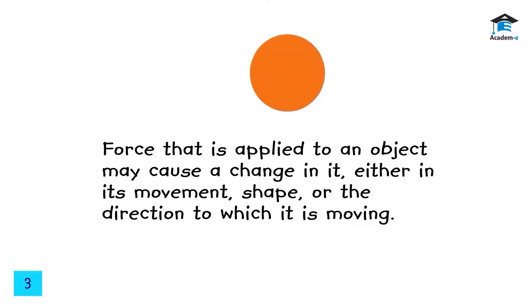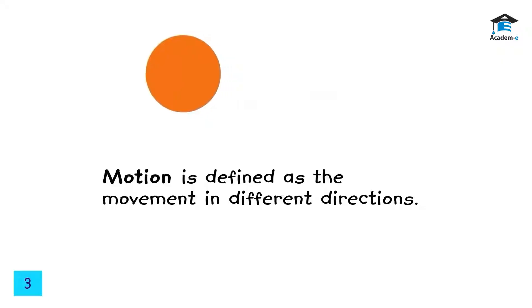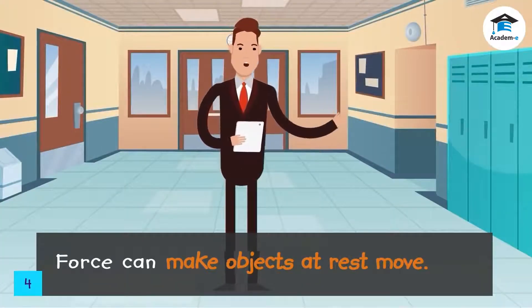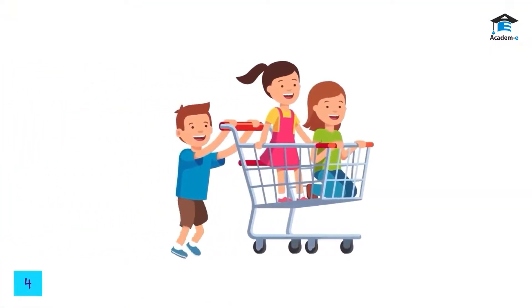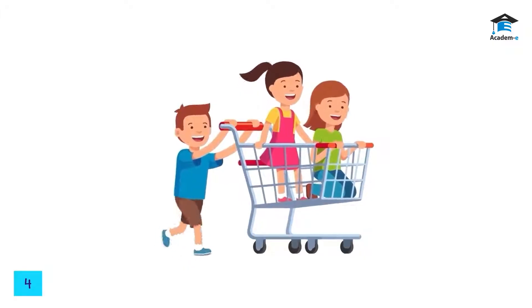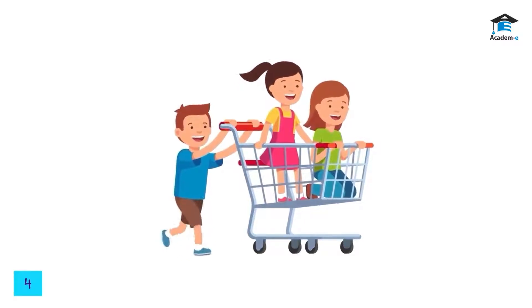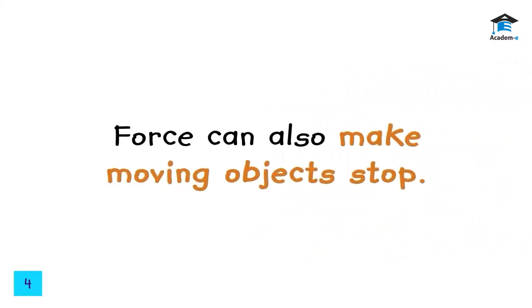When force is applied to an object, it may cause a change in its movement, shape, or direction. Motion is defined as movement in different directions. Force can make objects at rest move — for example, a boy pushes a cart to make it move. The cart pushed with greater force moved faster than one with the same mass pushed with a smaller force.